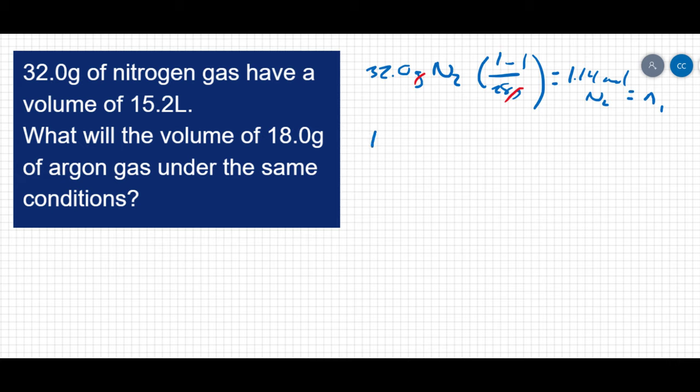I also am given 18 grams of argon. The molar mass of argon is 40 grams per mole. And I can cancel out the grams. And that gives me 0.45 moles of argon. And that's going to be N2 in my equation.